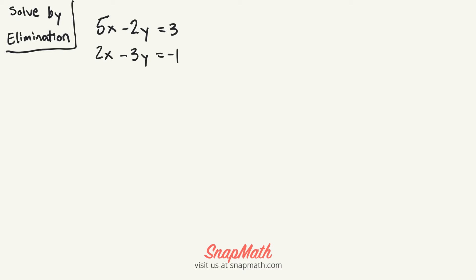Hi, Maya. Thanks for sending your question to SnapMath. So this is a two-variable question where we need to solve by elimination. By looking at these two equations, we're going to have to multiply both equations by a number to eliminate one of the variables. So I'm going to choose to eliminate the x value.